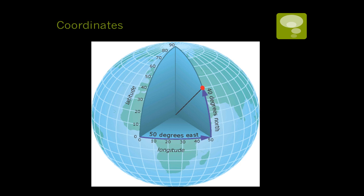Here is an example showing both of them being used at once. You have 50 degrees east of the prime meridian and 40 degrees north of the equator. So you have two angles that have been measured, and that gives you this red dot — the location of this individual.